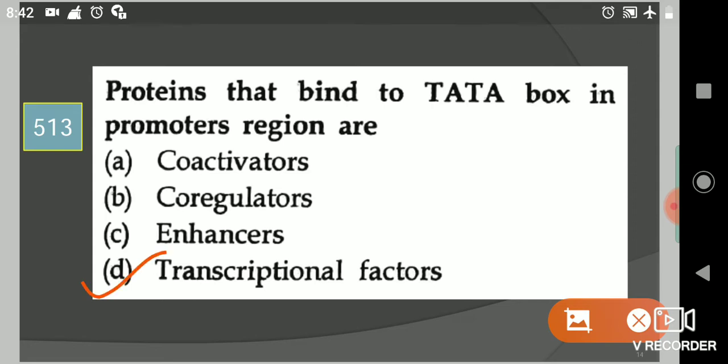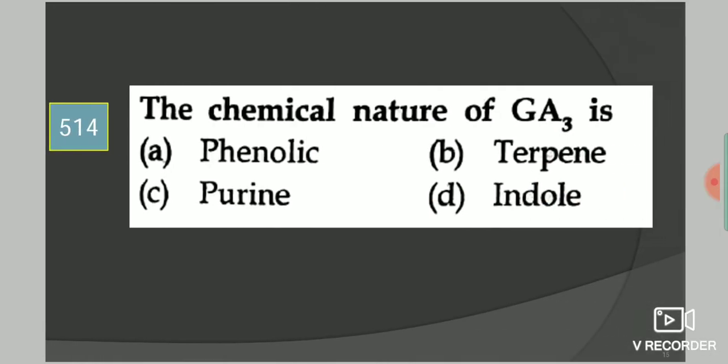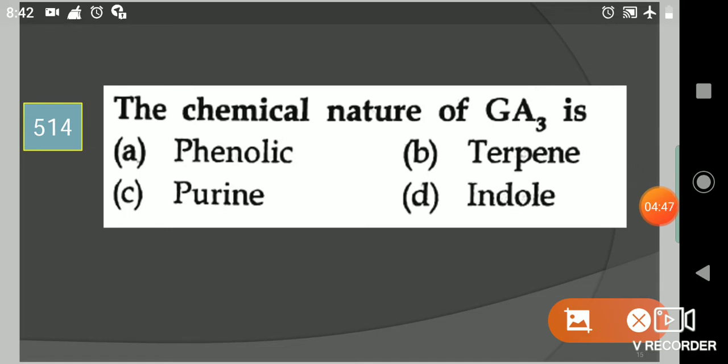Next question: The chemical nature of GA3 is? Your options are phenolic, terpene, purine, indole. Your answer is option B, terpene.